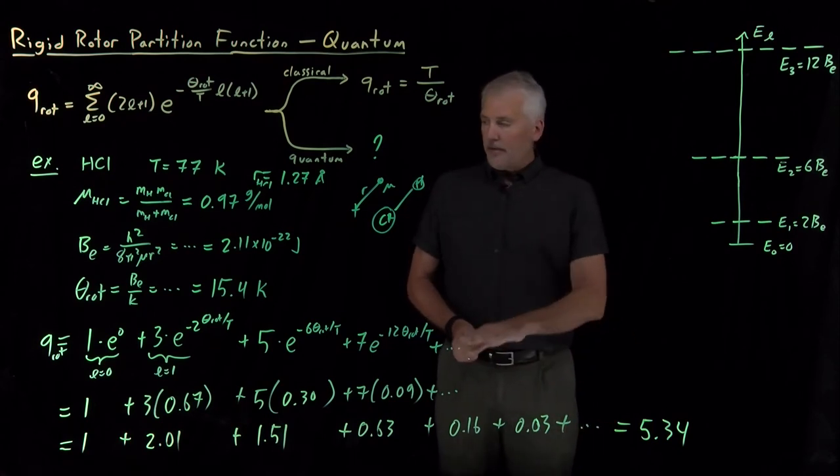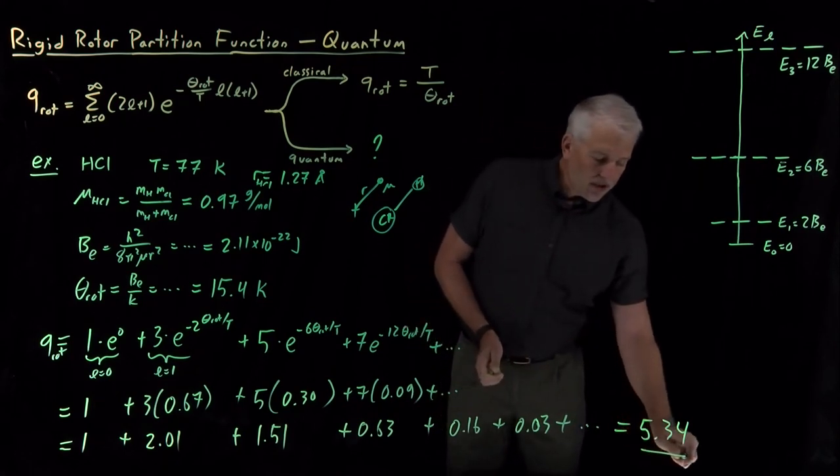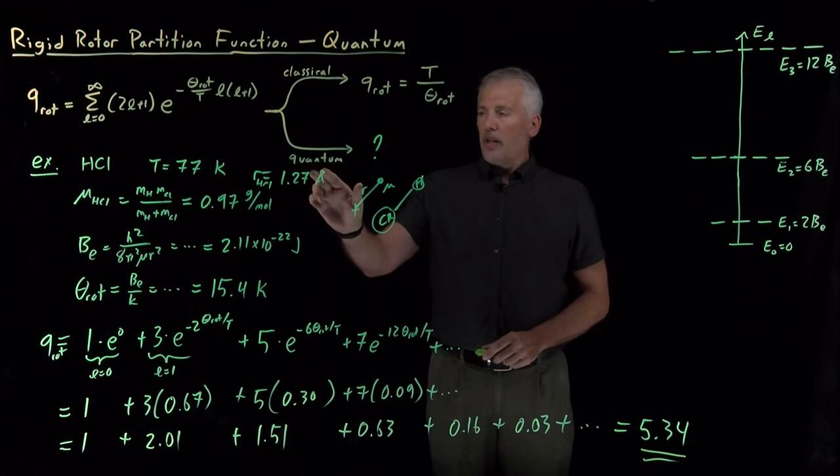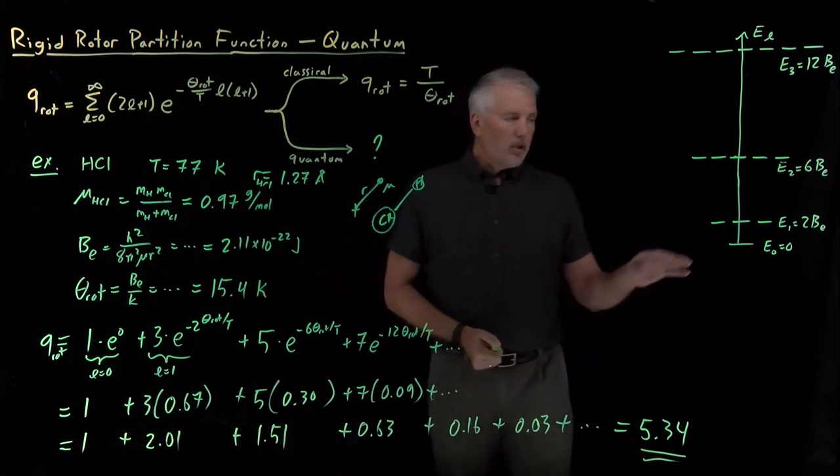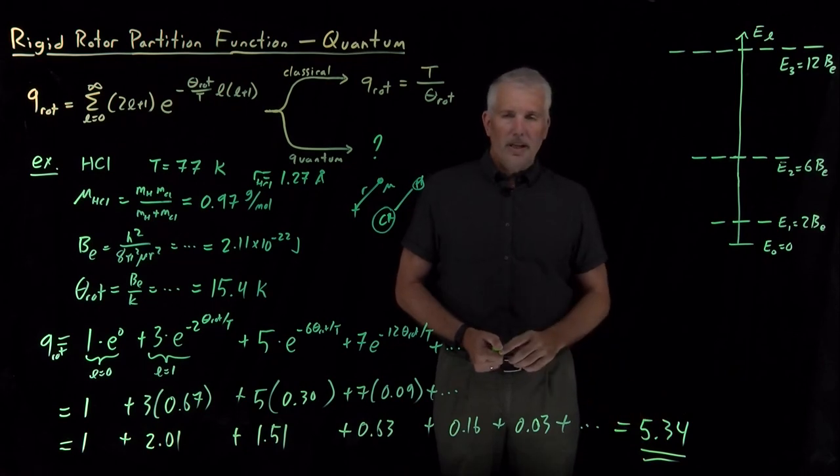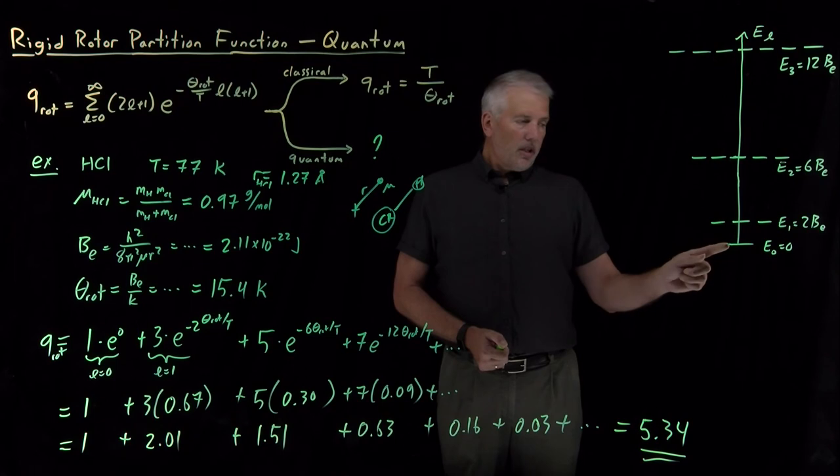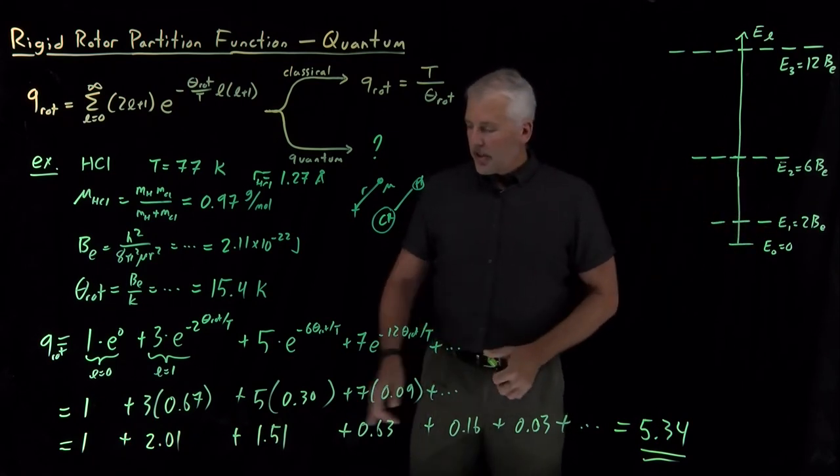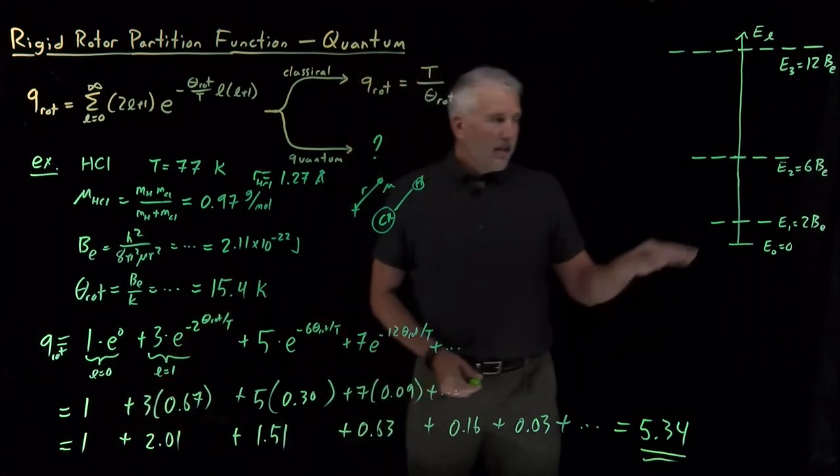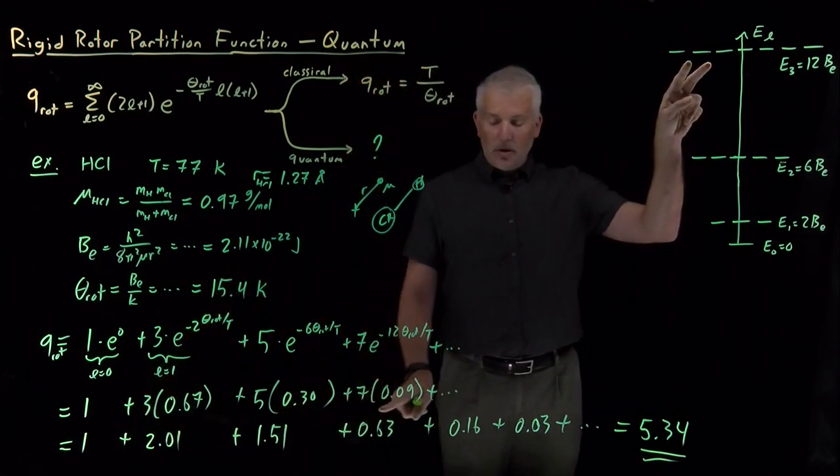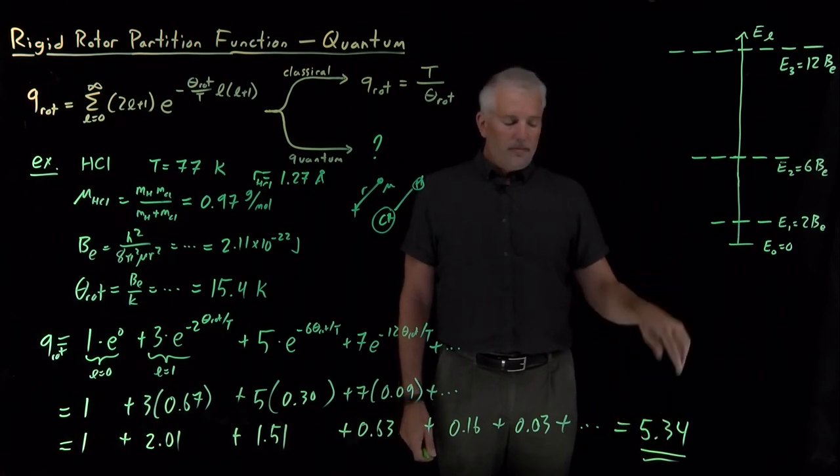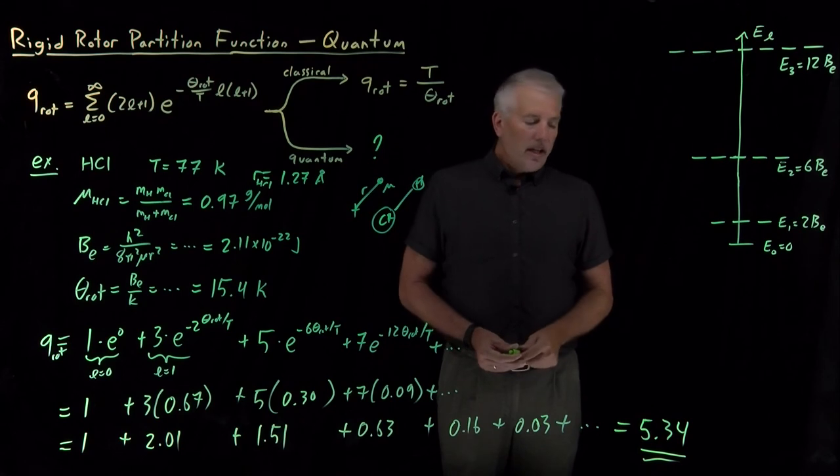So what does that mean for the partition function? First of all, the fact that we got a partition function that was about 5, that confirms our expectation that we're under quantum mechanical conditions. Not very many of these states are occupied. In fact, the partition function tells us that the effective number of states that are accessible is about 5.3. So not much more than these first few states are occupied. Essentially, these numbers tell us that the L equals 1 states are only about 0.67 as occupied as the ground state. These states are only about 30% as occupied. These states are only 9% as occupied. And when I add up all those fractional occupations, I get an effective number of 5 or so states that are accessible.